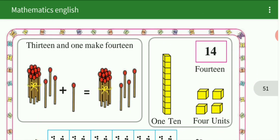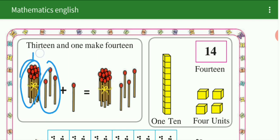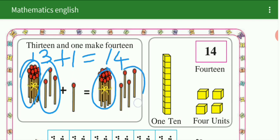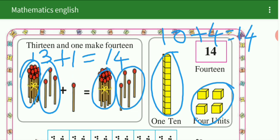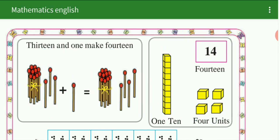Next है — 14. कितने हैं यहाँ पर? 13 plus 1 is 14. See here: 10 plus 3 is equal to 13, 13 plus 1 is equal to 14. 10 plus 4 is equal to 14. See here — 10 box, मतलब 1 tenth, मतलब 10 unit plus 4 box is equal to 14. 10 plus 4 is equal to 14.